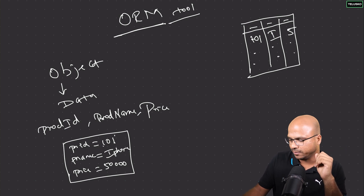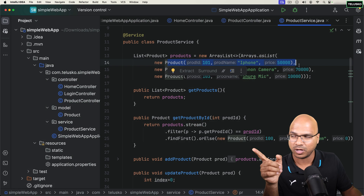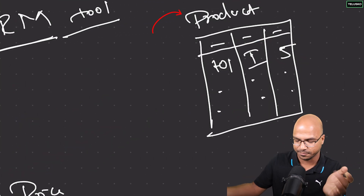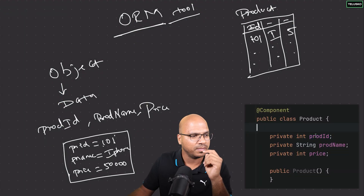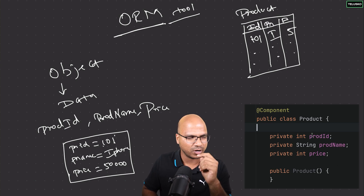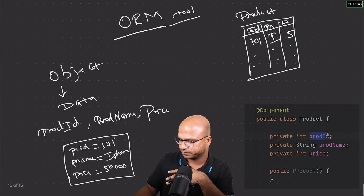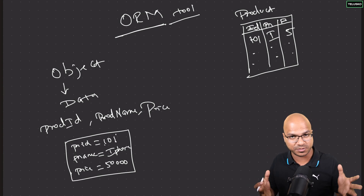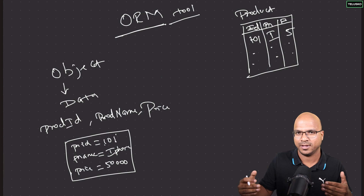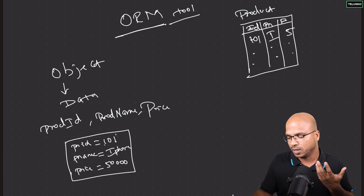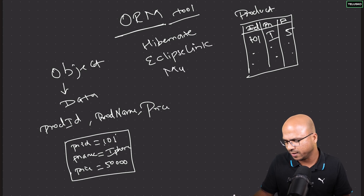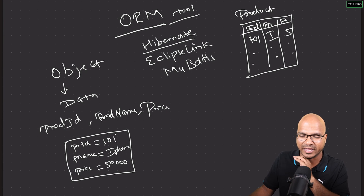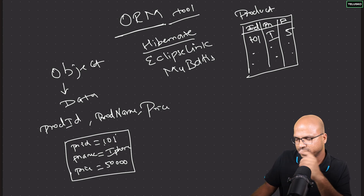The ORM tool derives the table name from the class name, so class 'Product' becomes the 'Product' table. Each variable becomes a column — product name, price — and each object becomes one row. If you have 10 objects you get 10 rows. The ORM tool handles all of this for you. Examples of ORM tools include Hibernate, which is the most famous full-fledged ORM tool, and EclipseLink.